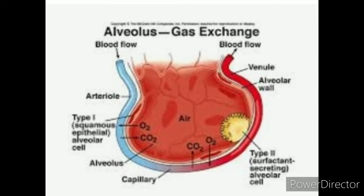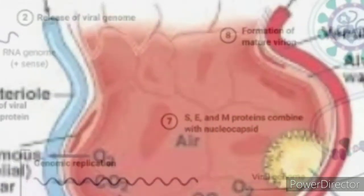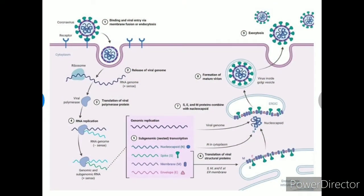SARS-CoV-2 mainly invades these alveolar cells, resulting in respiratory symptoms. The virus targets and binds to ACE2, a receptor as well as an enzyme present on the surface of the alveolar cell. ACE2 is needed for the virus to gain entry inside the cell.